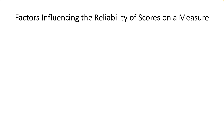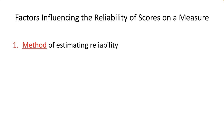Several factors influence reliability scores. The method used to measure reliability can yield different estimates — for example, Cronbach's alpha might be 0.80 for a measure of a transient emotion, but test-retest reliability might be very low since emotions are fleeting. The correlation between boredom at time 1 and time 2 might be near zero, since one is rarely bored for long periods of time.